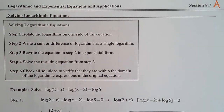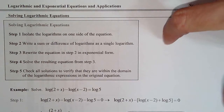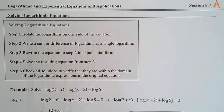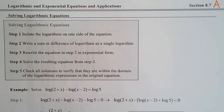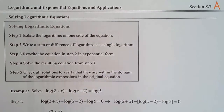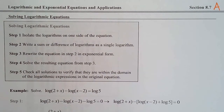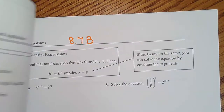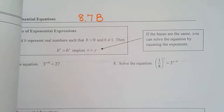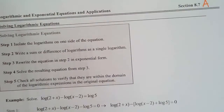We're ready to start our last section. I divided it into two sections. We had an old edition of this book, and it had the first two pages in one section and the last three pages in another. When they combined the sections, it's way too long for one lesson. So the first two pages I'm going to call 8.7a, and the last three pages we're going to call 8.7b. They're two different topics.